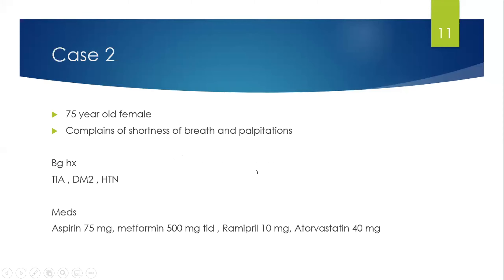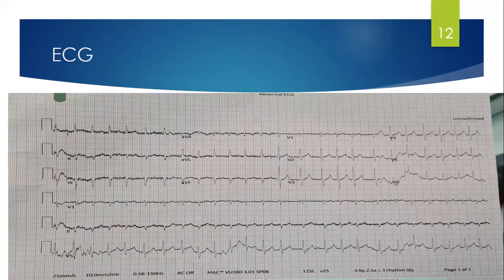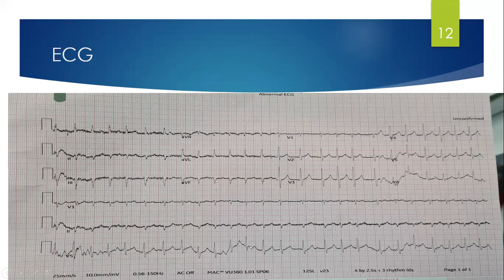Case 2: a 75-year-old female with shortness of breath and palpitations. Background history: TIA two years ago, type 2 diabetes, hypertension. Medications: aspirin, metformin, ramipril, atorvastatin. GP did an ECG — any comments? Step-by-step: narrow complex QRS, tachycardic, irregular RR intervals, absent P-waves. Most likely atrial fibrillation.